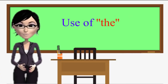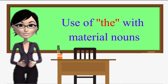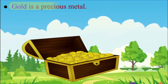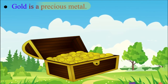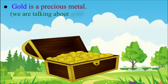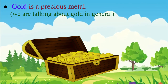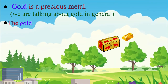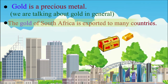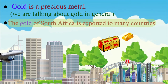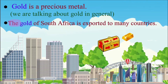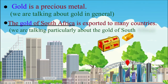Use of 'the' with material nouns. 'Gold is a precious metal.' In this sentence, we do not use an article because we are talking about gold in general. Now consider: 'The gold of South Africa is exported to many countries.' In this sentence, we use 'the' because we are talking particularly about the gold of South Africa.